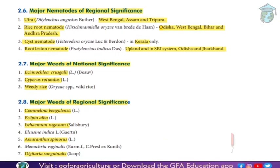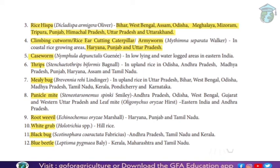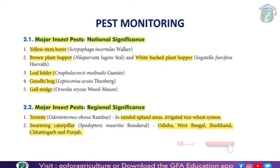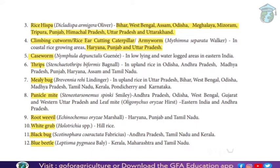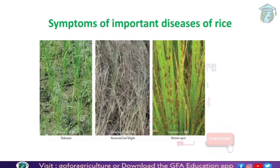So, this covers major rodents, nematodes, weeds, diseases, and insect pests — regional and national significance. This is the introduction. If you have any information about these pests or diseases, it will be easy for you because in upcoming topics we need to use every disease, cultural methods, biological methods, and predators. It is important to remember at least 2 to 3 in each category — 2 to 3 pests, 2 to 3 diseases, 2 to 3 weeds. That's enough.